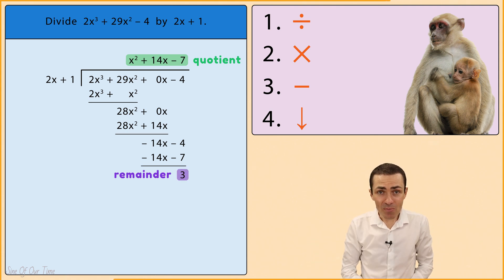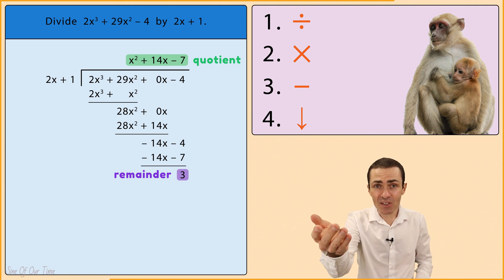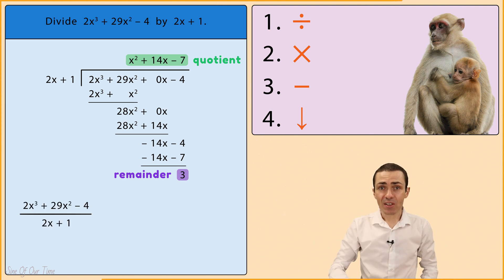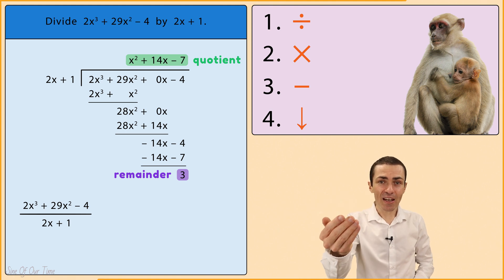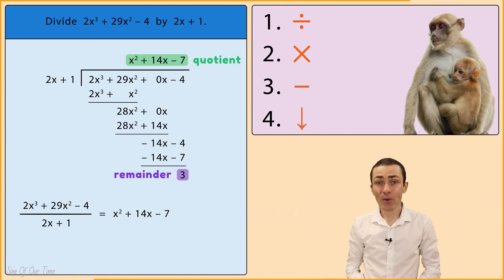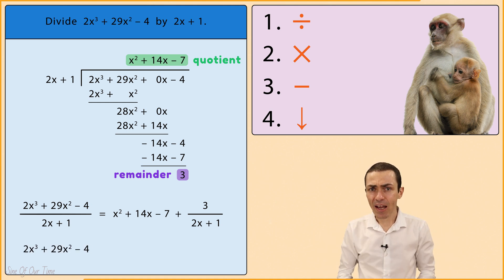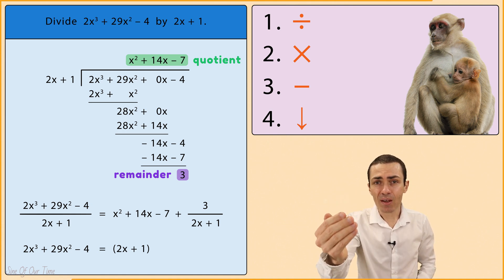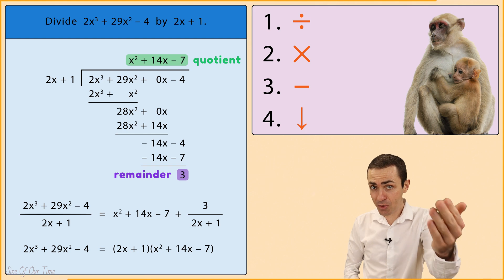And what this really means is when we take the dividend and we divide it by 2x plus 1, our result is x squared plus 14x minus 7 with the remainder of 3. In other words, the dividend can be written as 2x plus 1 multiplied by x squared plus 14x minus 7 plus the remainder of 3.